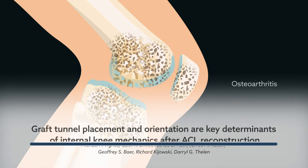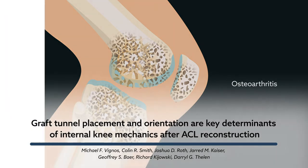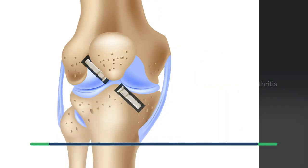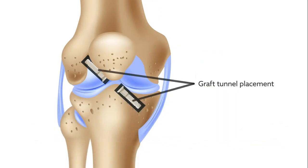Early-onset knee osteoarthritis is commonly observed after ACL reconstruction and may be attributable to residual abnormal joint mechanics following surgery. Graft tunnel placement is a surgical factor that may affect internal knee joint mechanics and thereby joint health.